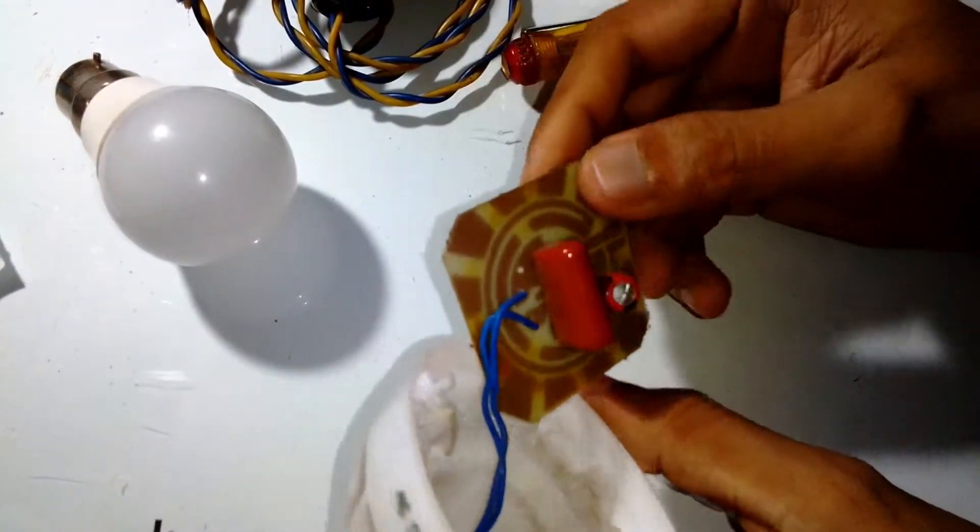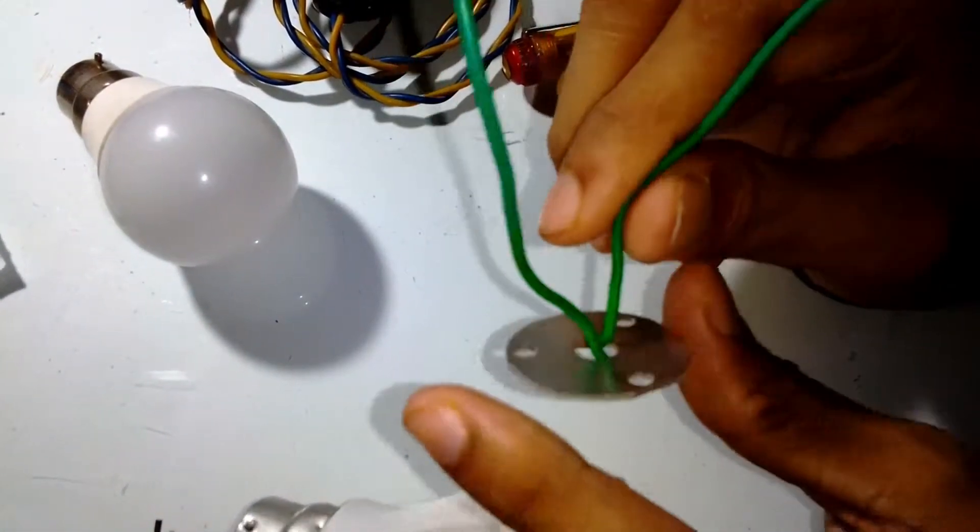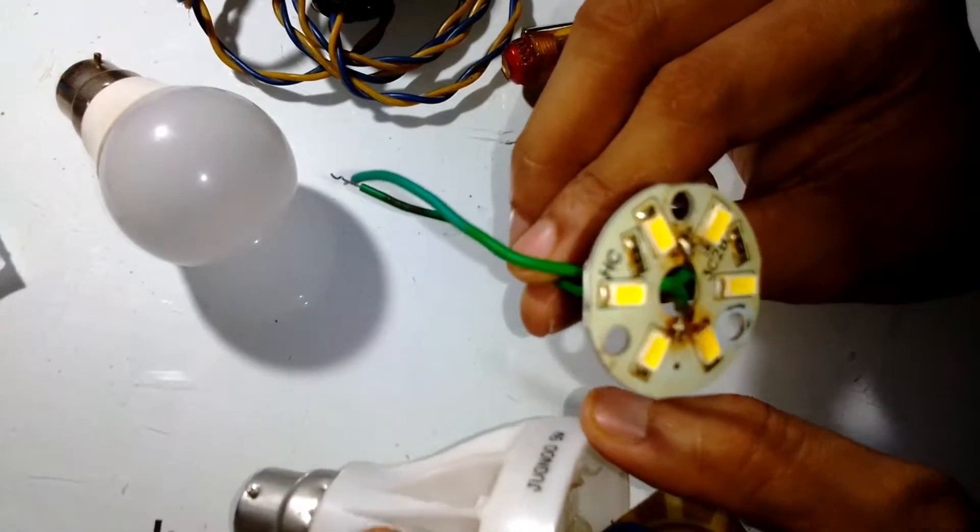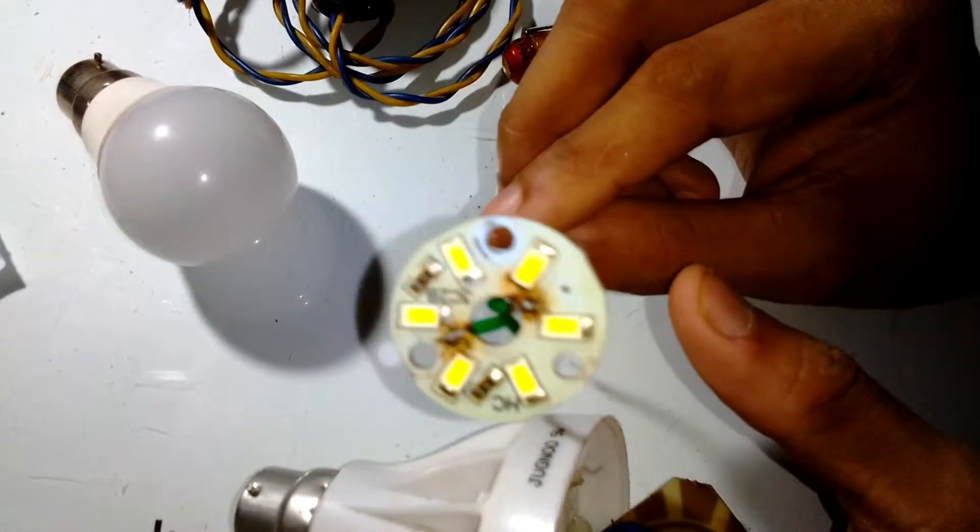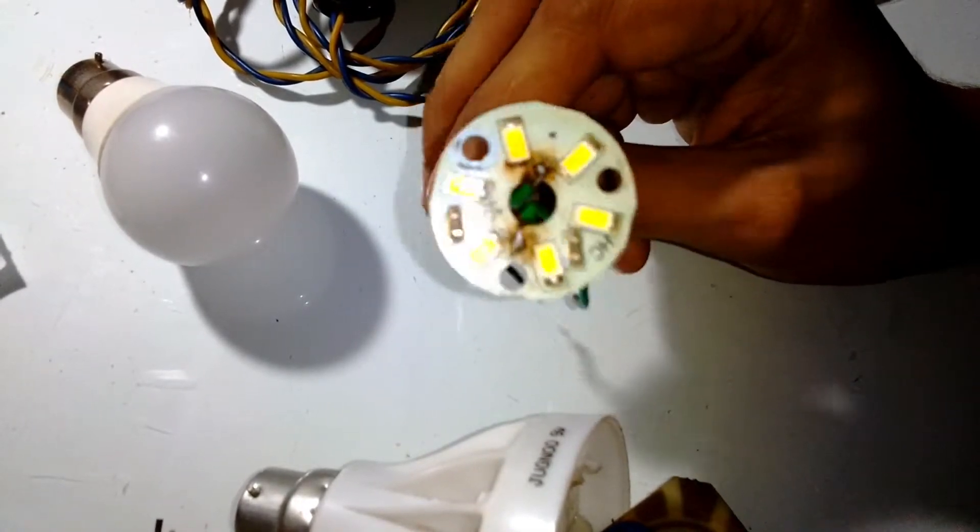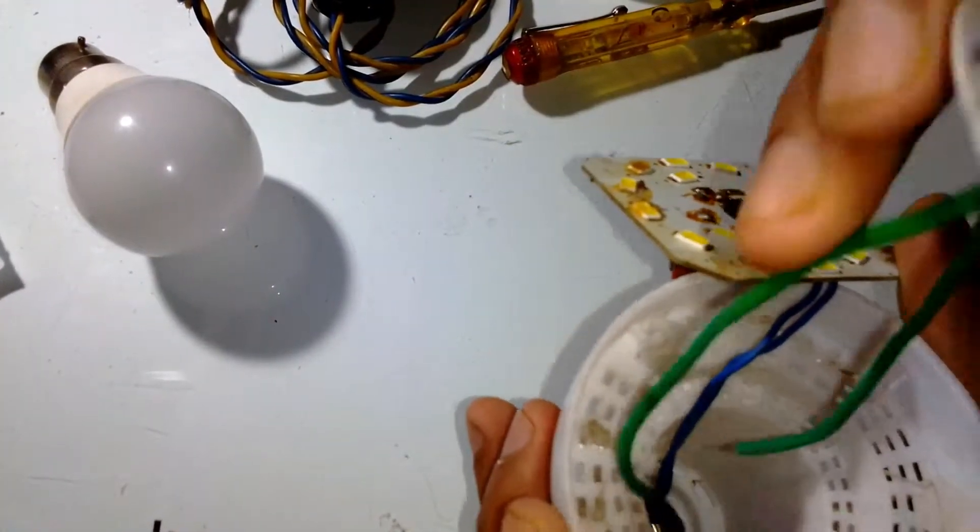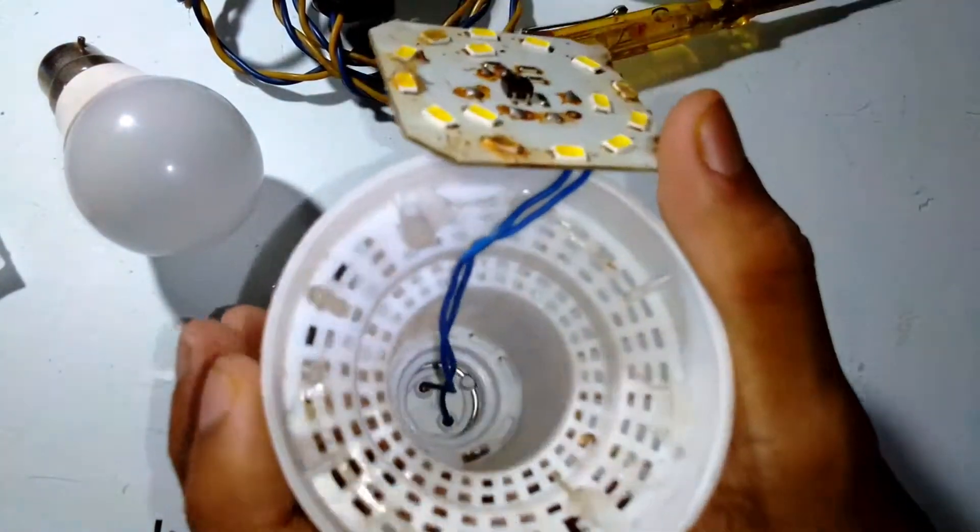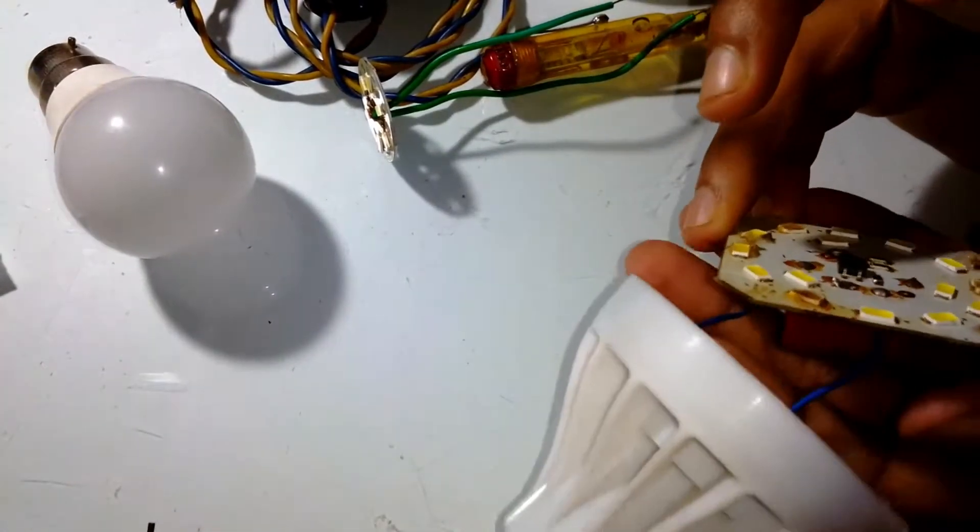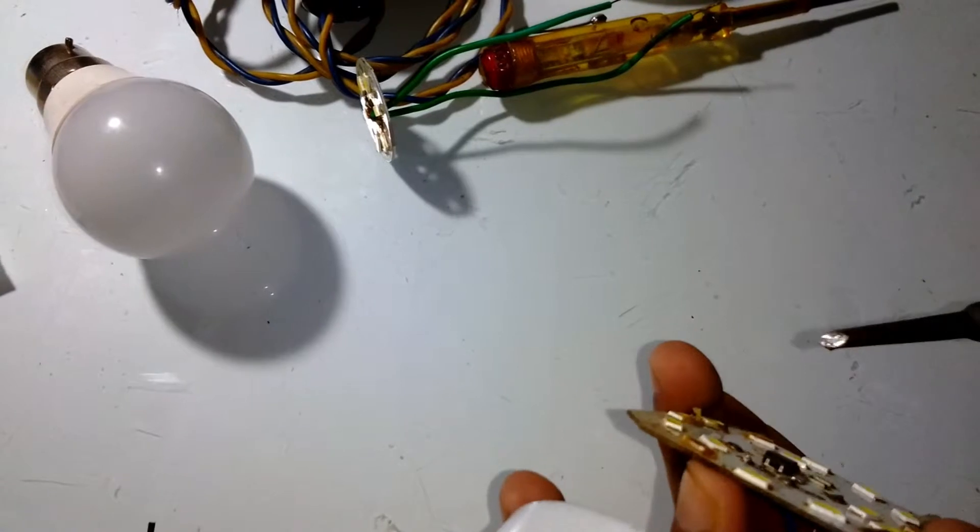For the record, SMD means surface mounted device. This is the LED board that I'm going to replace it with. It's an automotive decorative lighting panel used in cars or bikes for different types of decorations. I've taken it from there. It works on 12 volts and has resistance SMD on the panel. I'm going to replace it with the other one.